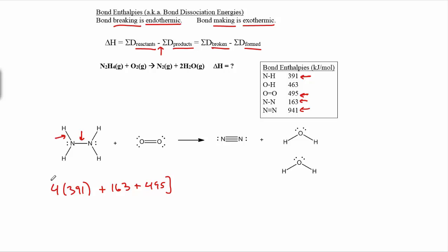Then we'll subtract in the sum of all the bonds in the products. In the products, we've got this nitrogen-nitrogen triple bond - that's 941. And then we've got these OH bonds at 463, and there's four of those.